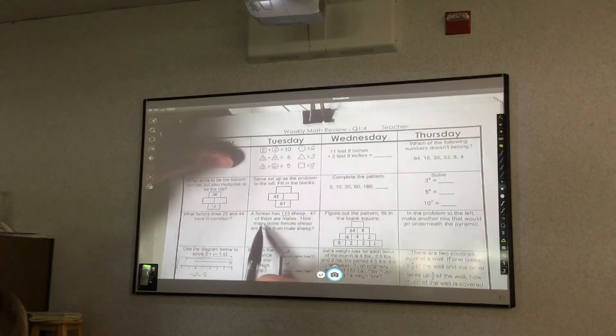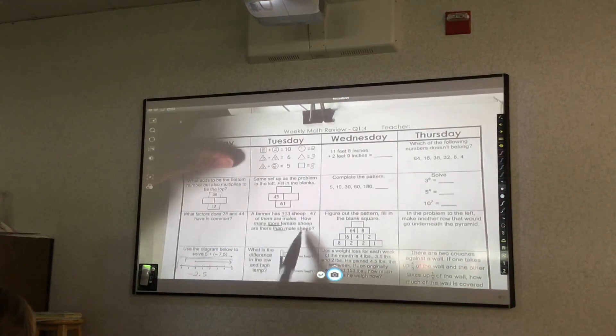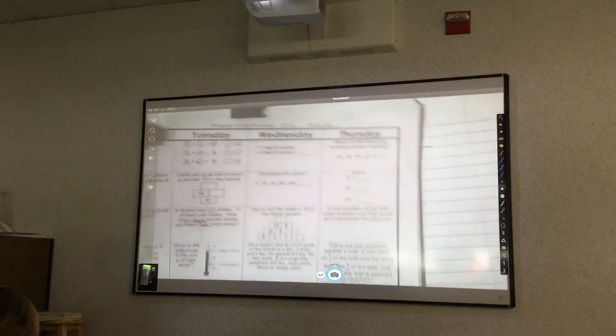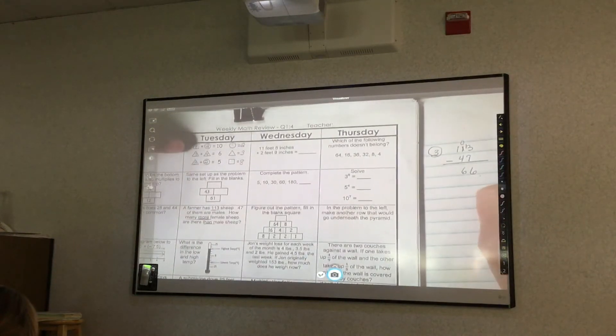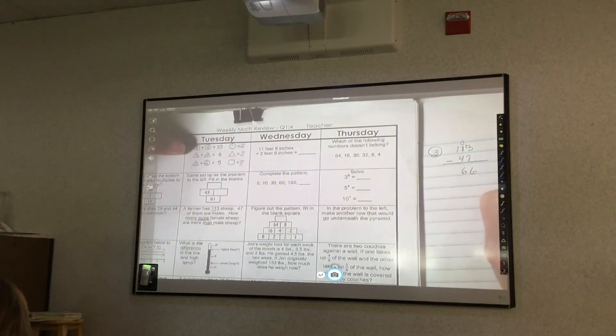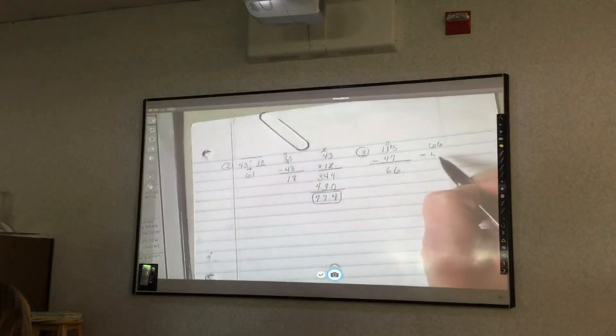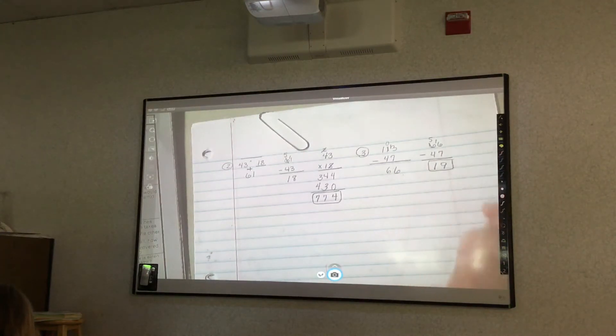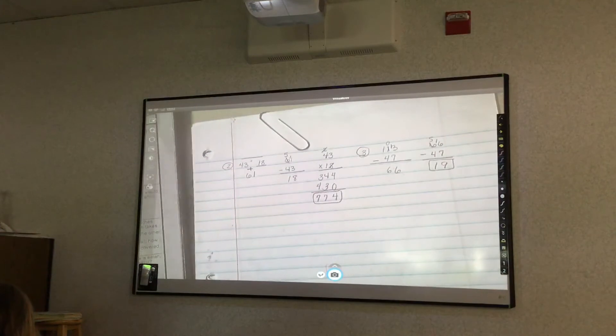Because it says how many more female sheep are there than male sheep. So I'm comparing the females and the males. So I needed to take my 66 and subtract it - 66 minus 47. 6 becomes a 5. This becomes a 16. 16 minus 7 is 9. And 5 minus 4 is 1. So your final answer is 19. A lot of people want to stop at the 66.